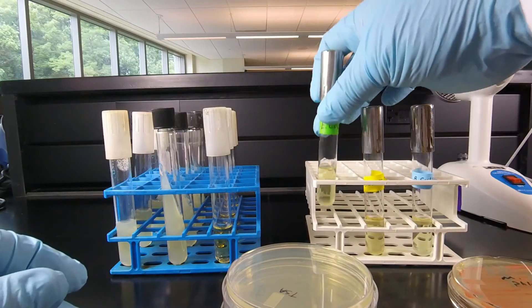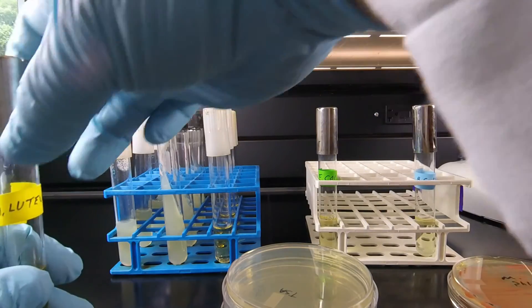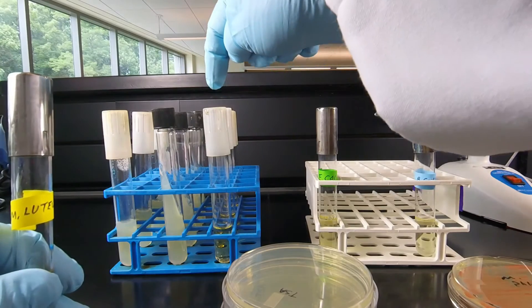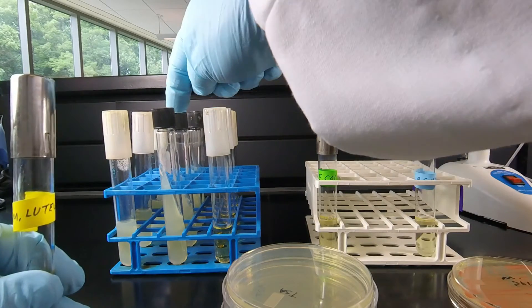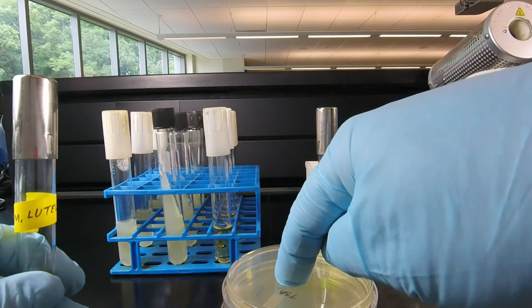Then you can return that culture, pick up your second one—micrococcus luteus. You're going to put that into a second broth tube, a second slant tube, a second stab tube, and a second petri plate.